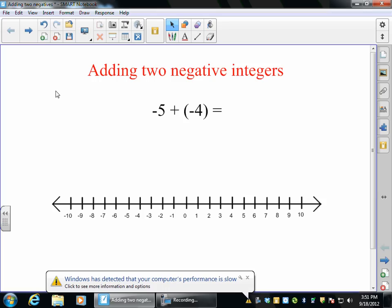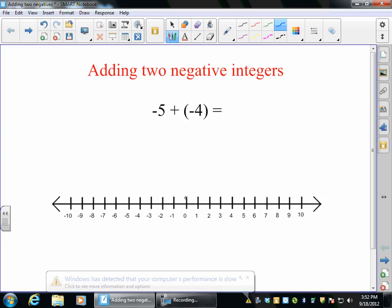So some of you may already know or you may have a good guess as to what the answer to this one is, negative 5 plus negative 4. But again, I wanted to make sure that you see, because they're not all going to be this easy. Using a number line is going to help you. If I'm looking at this problem and I'm starting negative 5, so that means I'm coming down here to negative 5 first.